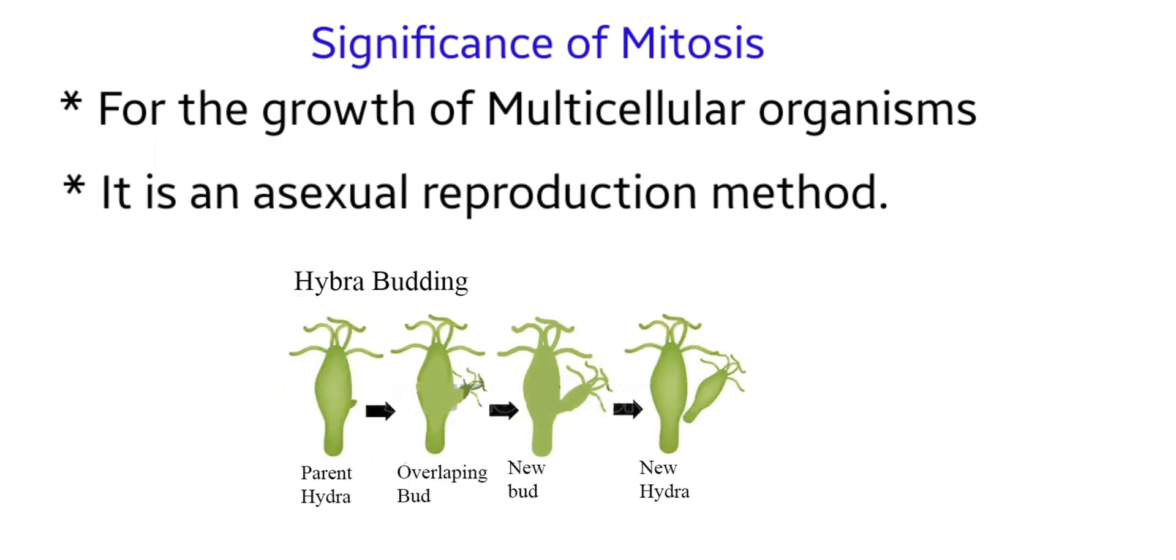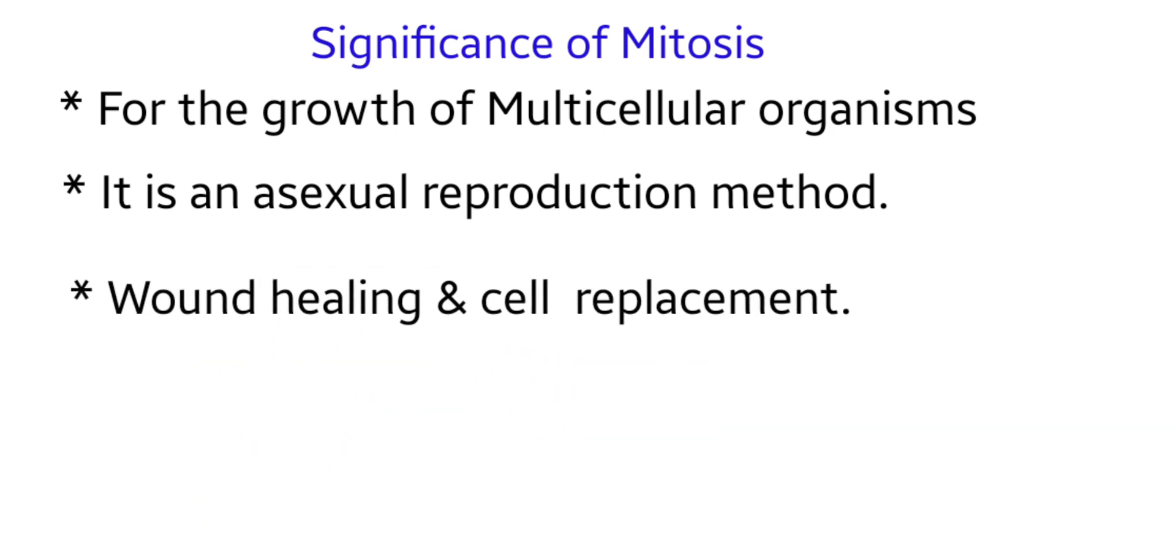Mitosis is the basis of asexual reproduction. Mitosis produces the cells needed to heal cuts, wounds, and broken bones. It produces the cells to replace dead skins and worn out red blood cells.